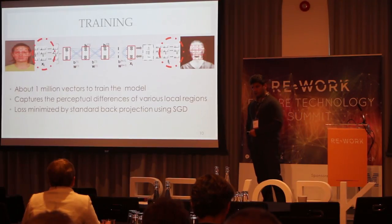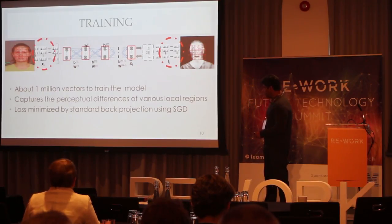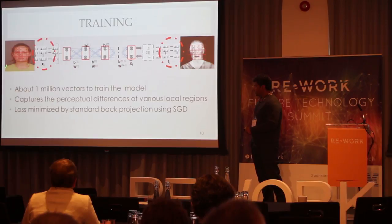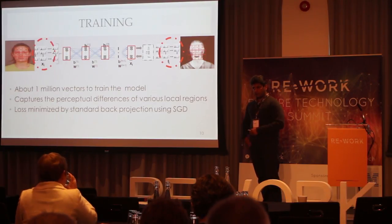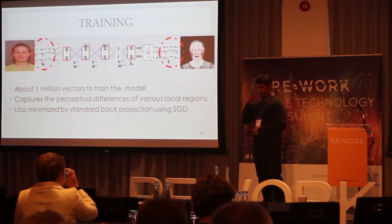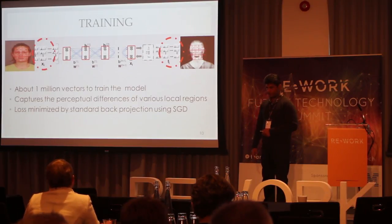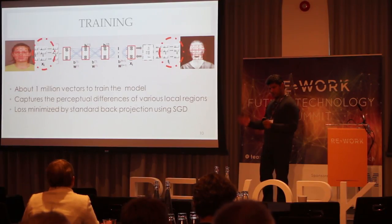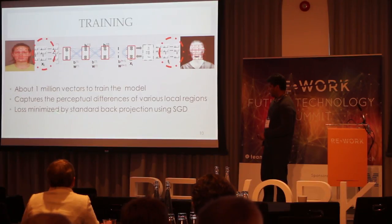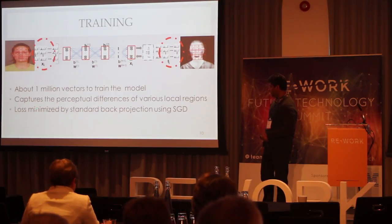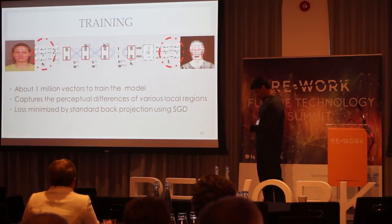For a meaningful training of such a system, we came up with the idea of decomposing the images into very small overlapping patches and analyzing them at different scales. Because in this problem we don't have much data — only a few hundred or thousand images. So to have meaningful training, we generate about one million vectors on the facial images from corresponding regions on the two images, which helps us capture the perceptual differences quite well.